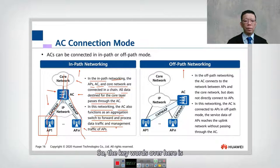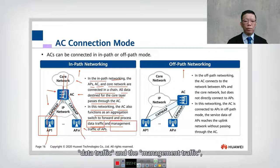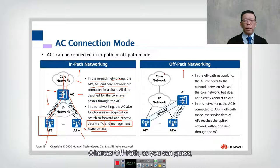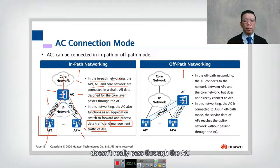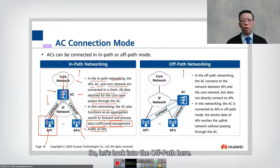The keyword here is data traffic and management traffic. That is in-path. Whereas off-path, as you can guess, means that the data traffic doesn't really pass through the AC — only the management traffic does.